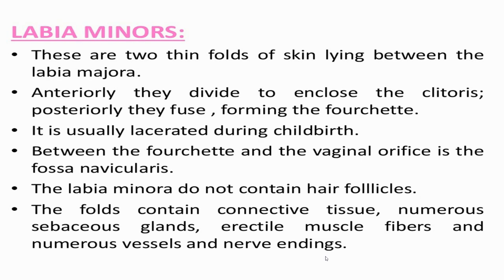The labia minora are two thin folds of skin lying between the labia majora. Anteriorly they divide to enclose the clitoris, and posteriorly they fuse, forming the fourchette. They are usually lacerated during childbirth, and between the fourchette and the vaginal orifice is the fossa navicularis. The labia minora do not contain hair follicles, but their folds contain connective tissue, numerous sebaceous glands, erectile muscle fibers, and numerous vessels and nerve endings.